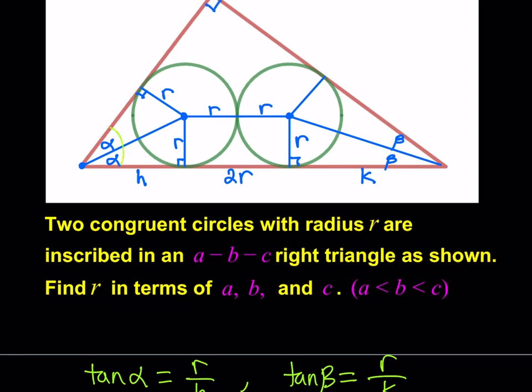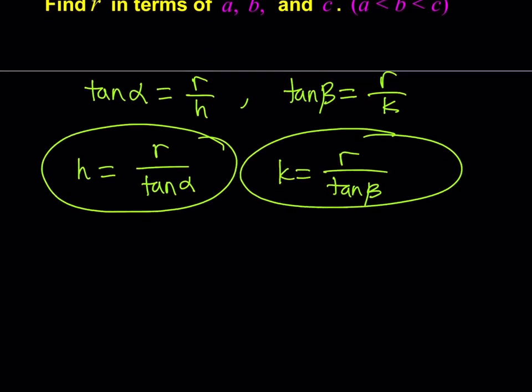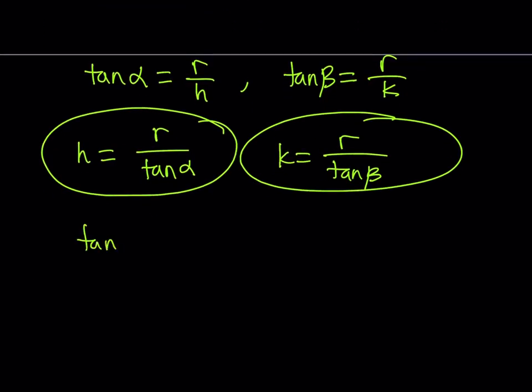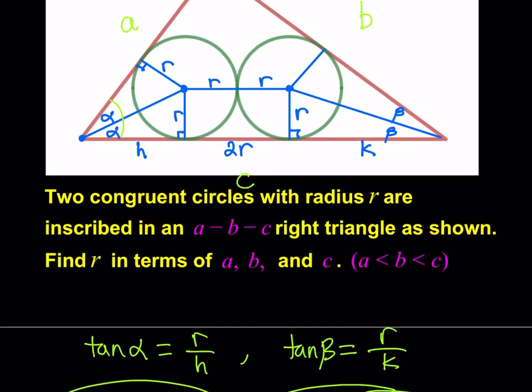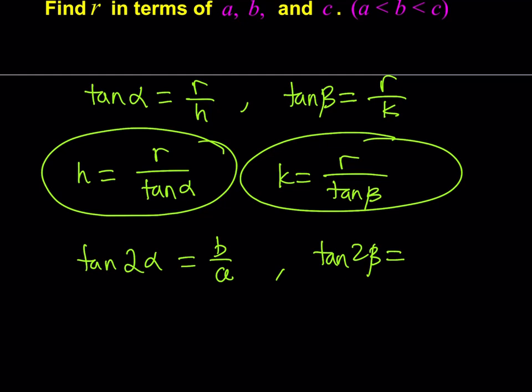tangent 2 alpha is equal to, this is a, by the way, and this is b. I forgot to say at the beginning. And this is c. Shorter leg is a. So, tangent 2 alpha is b over a. Tangent 2 alpha is equal to b over a. Nice. What about tangent 2 beta? Similarly. Well, 2 alpha and 2 beta are complementary. Therefore, it's just going to be the reciprocal, which is a over b. Cool.